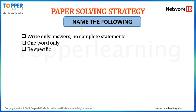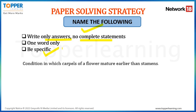Let's move to the next typology of question which is 'name the following.' Here, again you are expected to write only the answers. You do not need to copy the statements which are given in the question paper. The answers have to be very specific — more or less in one word only unless the correct term involves two components. For example: a condition in which carpels of a flower mature earlier than stamens. The correct answer is Protogyny, a condition in which the carpels — the female reproductive part — mature earlier than the stamens, which is the male reproductive part.